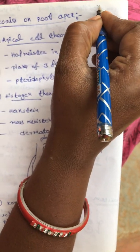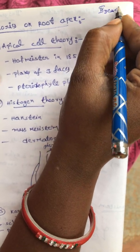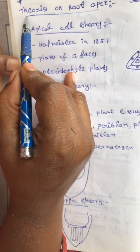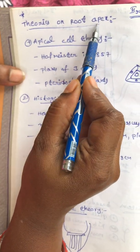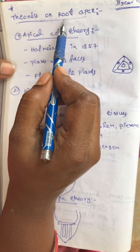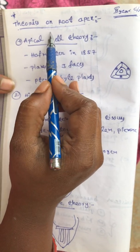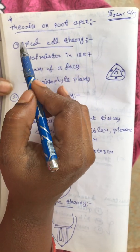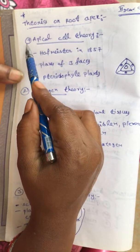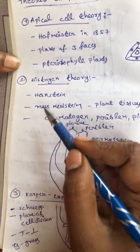My next topic for degree second year EM is theories of root apex - a very important topic about how the root apex area develops. Root apex development depends upon three theories: first is apical cell theory, second is histogen theory, and third is Korper-Kappe theory.